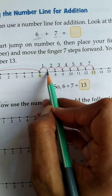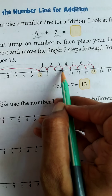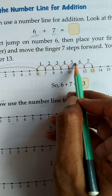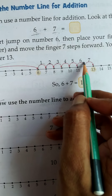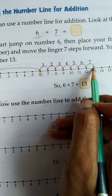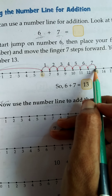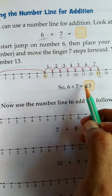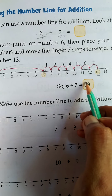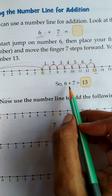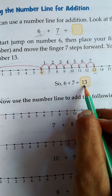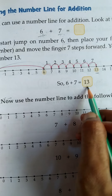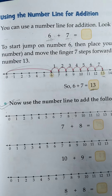Count 7 steps forward: 1, 2, 3, 4, 5, 6, 7. After 7 steps forward, what number are you on? 13. So 6 plus 7 is equal to 13. The answer is 13.